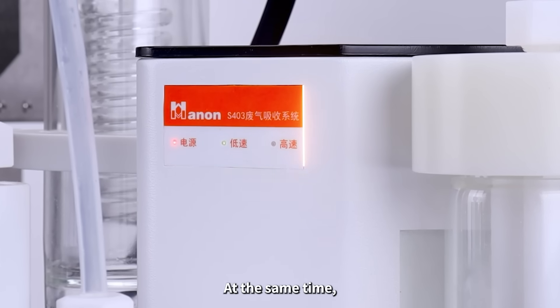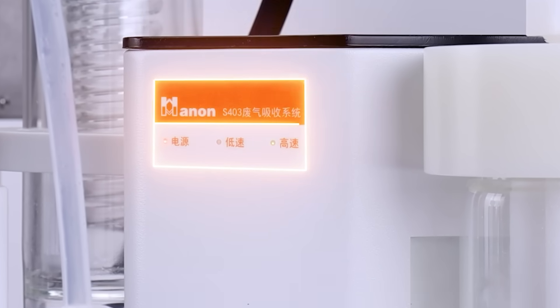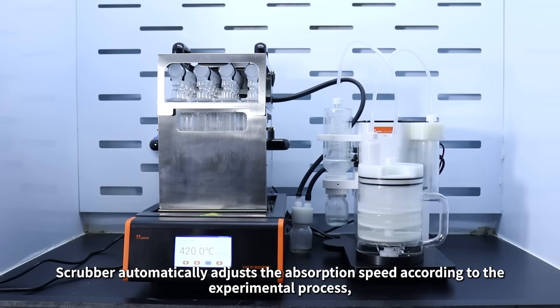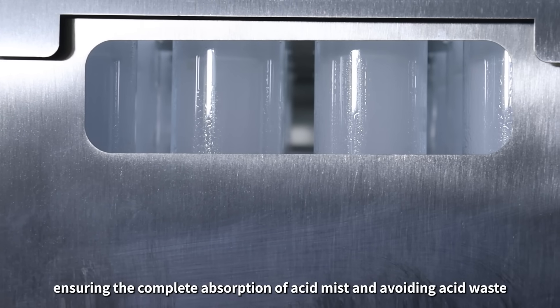At the same time, the exhaust gas absorption device is started by the digester. The scrubber automatically adjusts the absorption speed according to the experimental process, ensuring complete absorption of acid mist and avoiding acid waste.